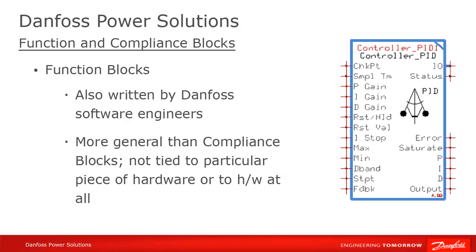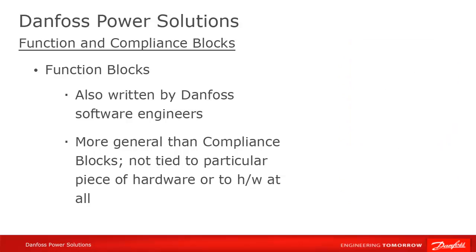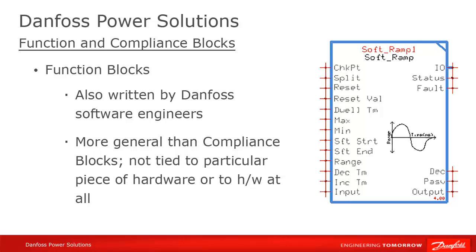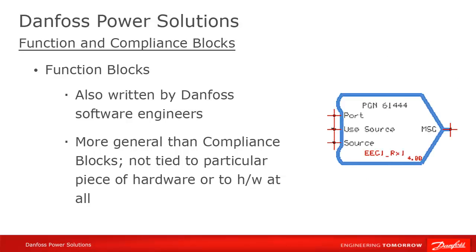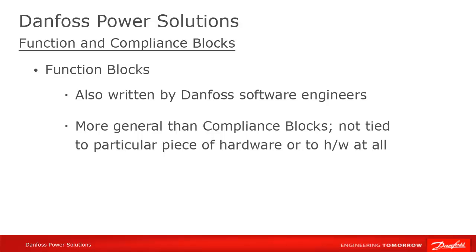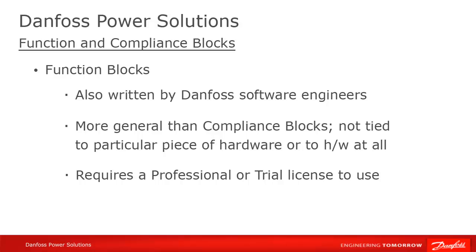There are other function blocks that aren't tied to hardware at all, like a PID block, a soft ramp block, or a J1939 CAN message block. Another major difference from a commercial perspective is that the use of function blocks requires a professional or a trial license. If you don't have one of those licenses activated, you will not be able to add a function block to your program.